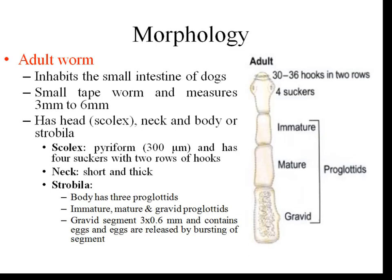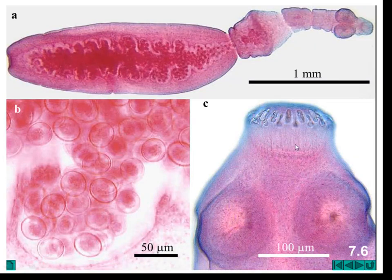Morphologically, the parasite has three forms: an adult form, larval form, and eggs. The adult form inhabits the small intestine of dogs and other canines. It is a small tapeworm measuring around 3 to 6 mm and has three parts: a head, neck, and body. The head is called the scolex, which is piriform in shape, measures around 300 microns, and has four suckers and two rows of hooklets.